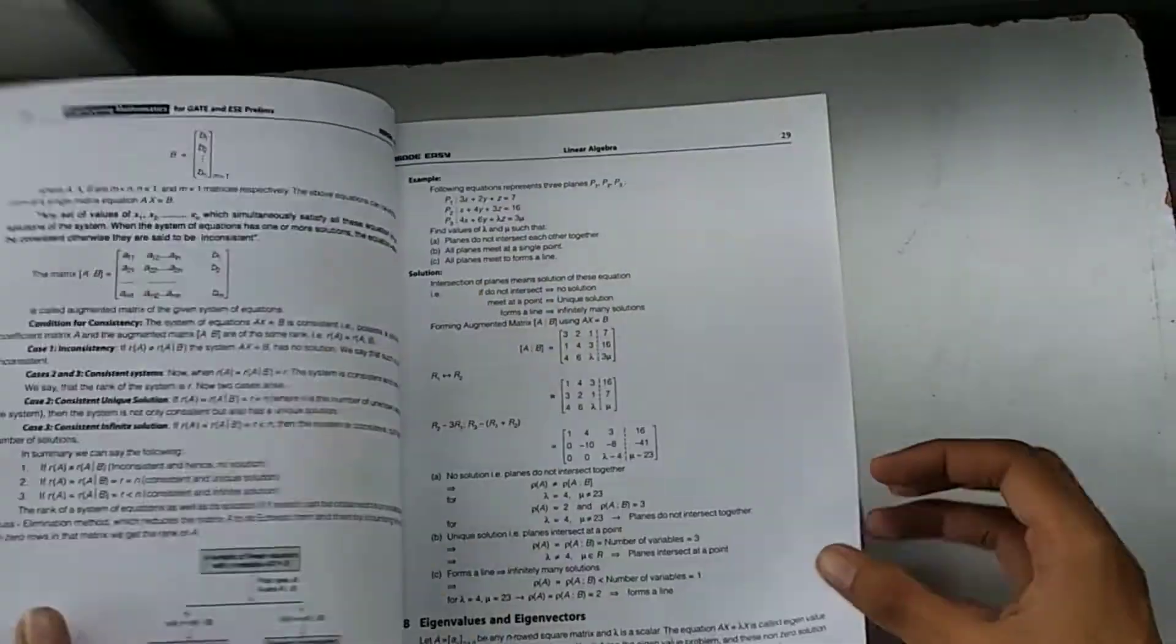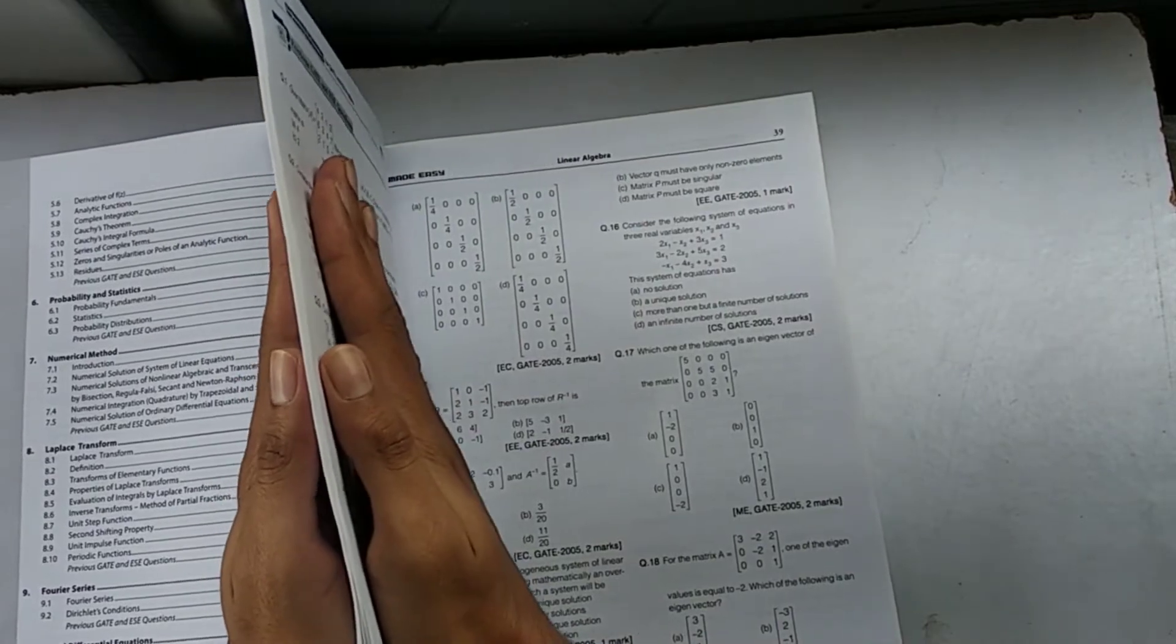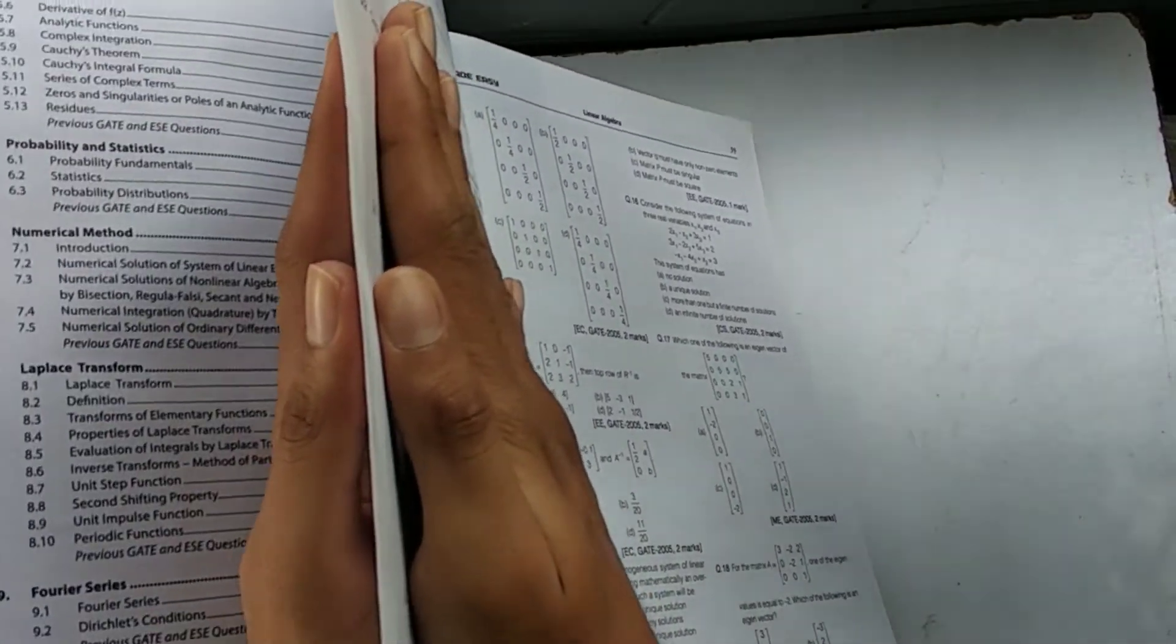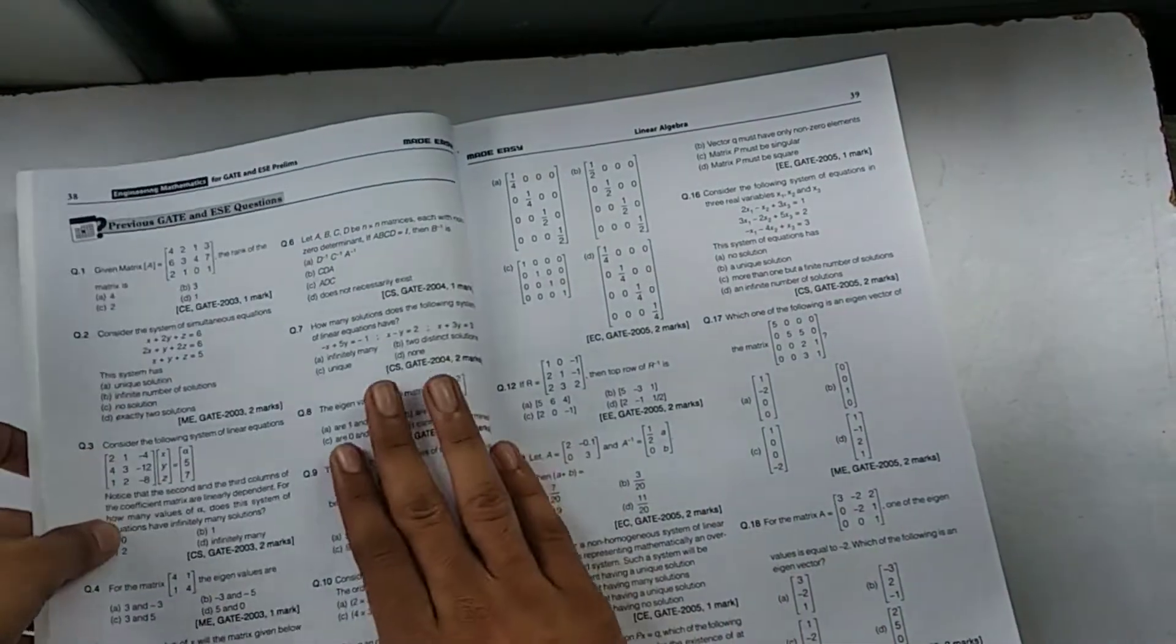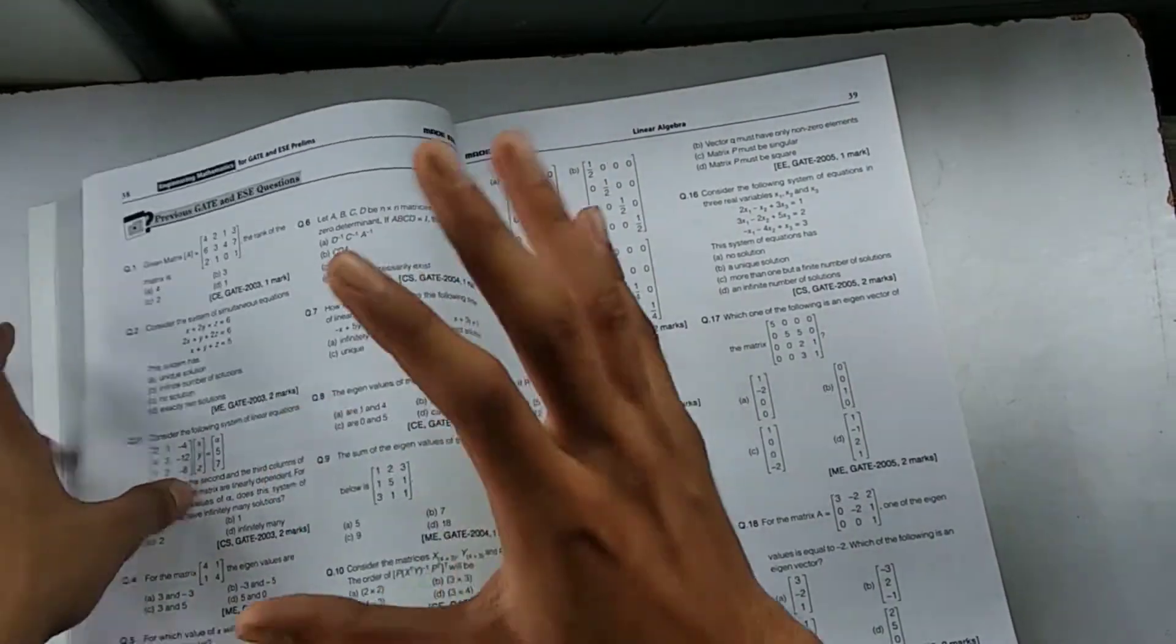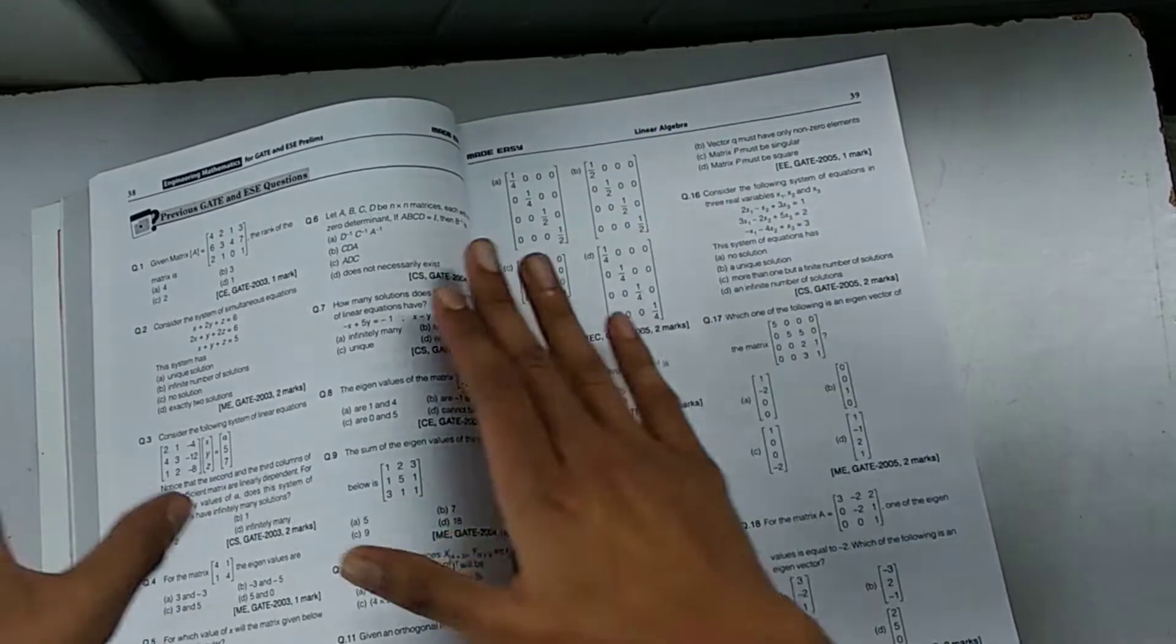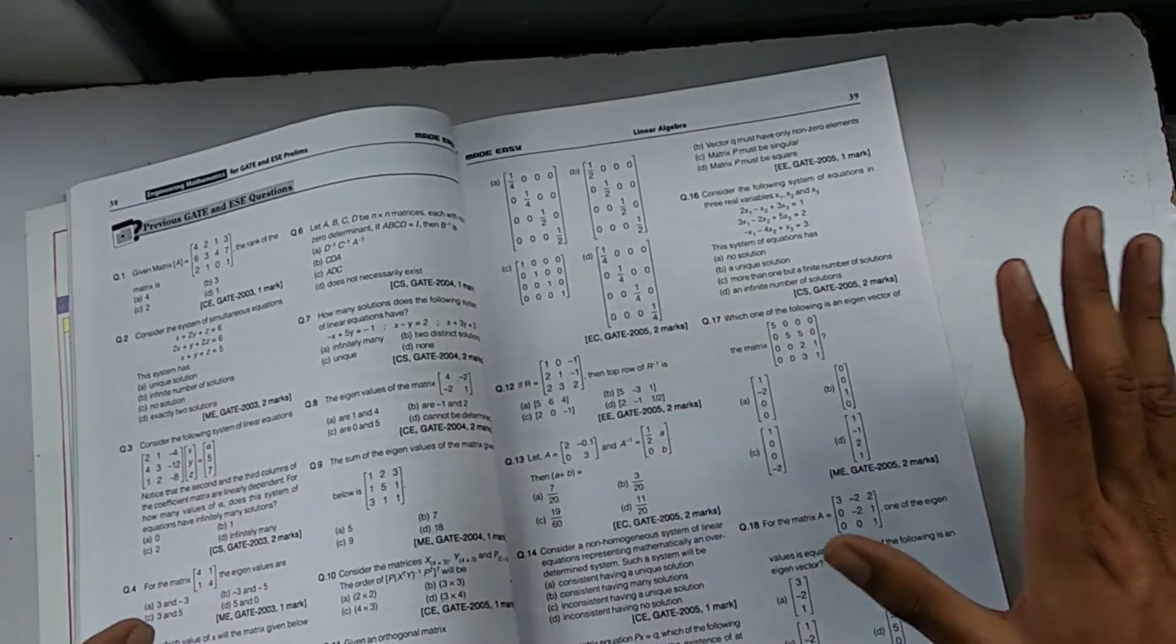Let me show you how detailed it is so that you get the idea. For Linear Algebra - just one unit, one chapter, one part of Engineering Mathematics - this is the theory. Can you see the thickness? I hope you can see it. After the theory, this is the synopsis, the theory and everything - the examples and all, just like class notes. And after that, these are the previous GATE and ESC questions.